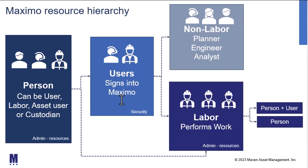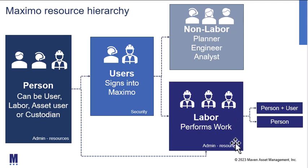Users can also be internal or external to your organization. From our users, we have a subset of two different groups. First are people who don't actually perform labor — they might be a planner, an engineer, or an analyst, but they're critical in ensuring your maintenance activities are performed properly. Then we have our labor records — those individuals who physically perform work. They're also located under administration resources. Labor records can be internal or external to your organization. Importantly, a labor record doesn't necessarily have to be a Maximo user. They may be a Maximo user, in which case they'll have both a person and a user record. But if they are not a Maximo user, they are still assigned a person record so you can assign and track work for that individual.